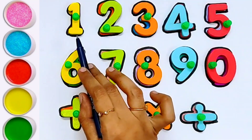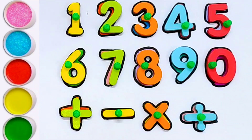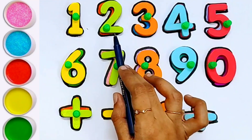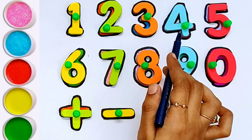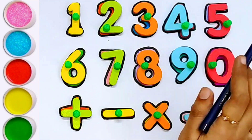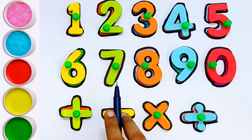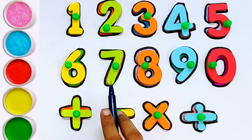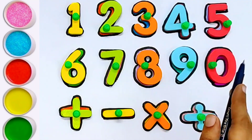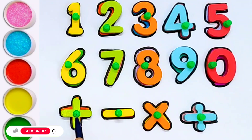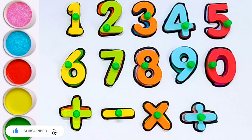1 ONE, 2 TWO, 3 THREE, 4 FOUR, 5 FIVE, 6 SIX, 7 SEVEN, 8 EIGHT, 9 NINE, 0 ZERO. Plus, multiplication, division. Thank you for watching children, please don't forget to like and subscribe our channel. Bye bye!